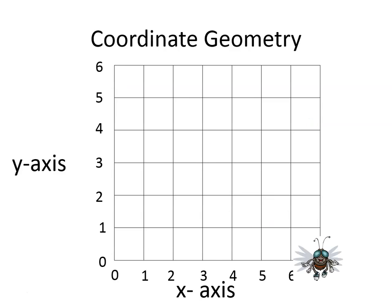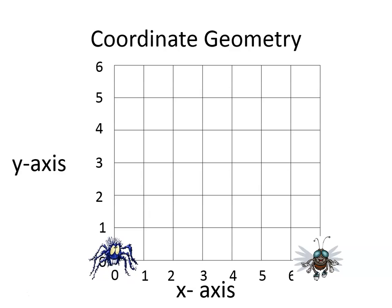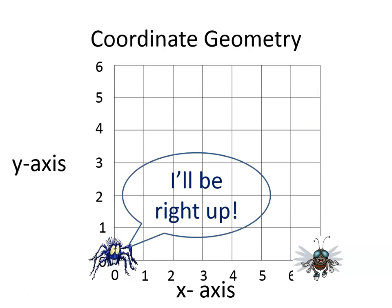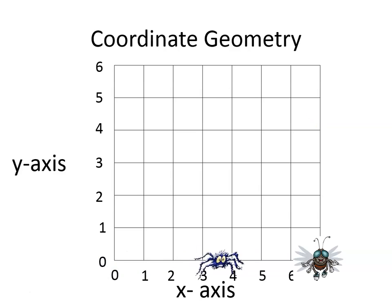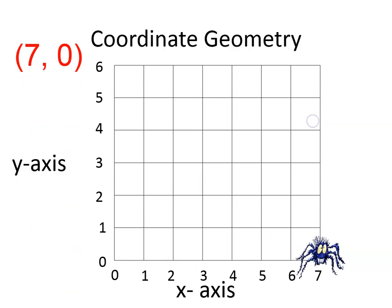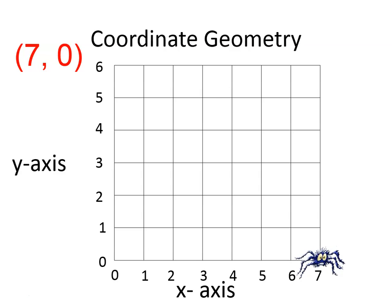Oh, we've got the fly sitting on the x-axis! There's the spider who says 'I'll be right up.' He just moved to the right; he didn't need to go up at all. He was at seven comma zero.